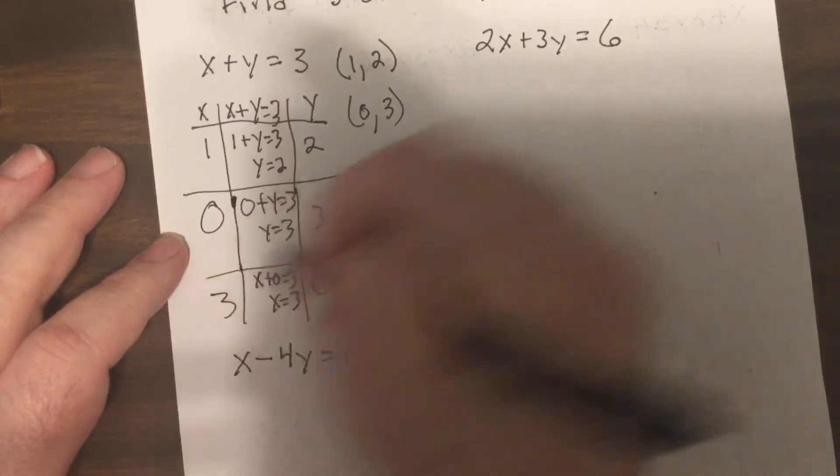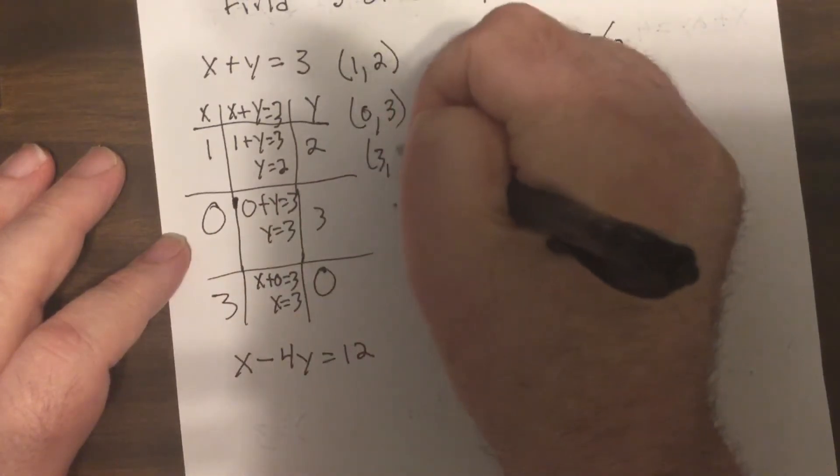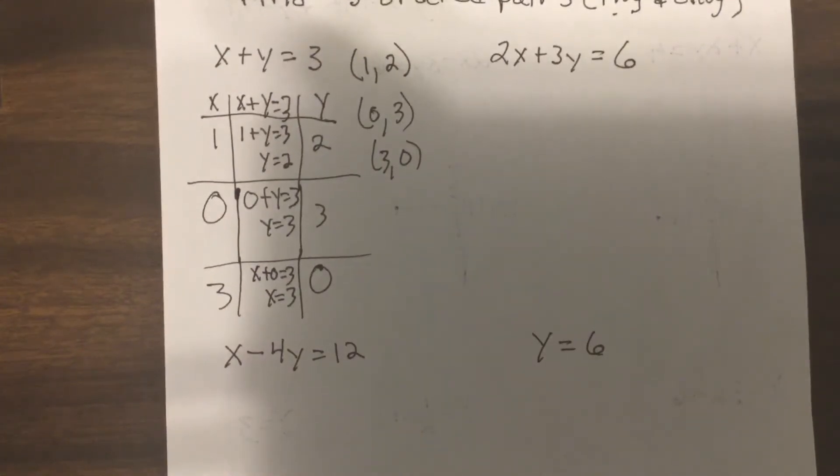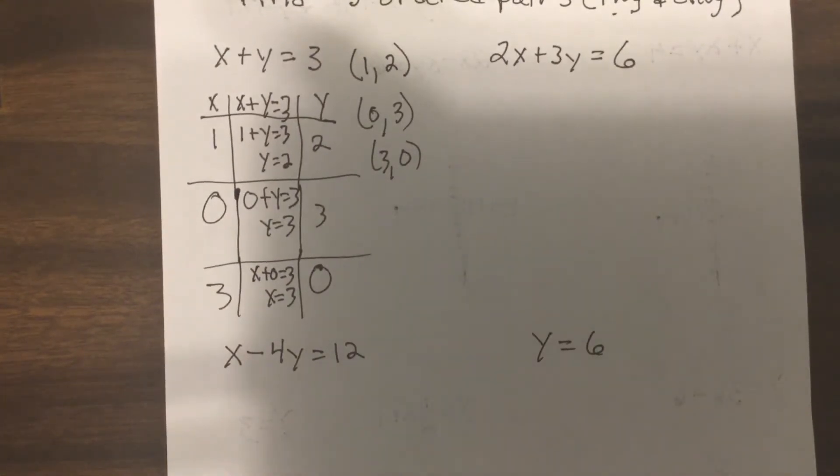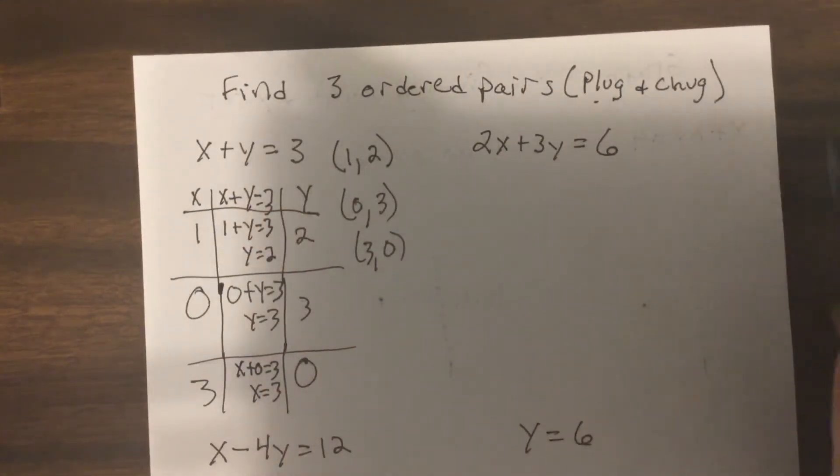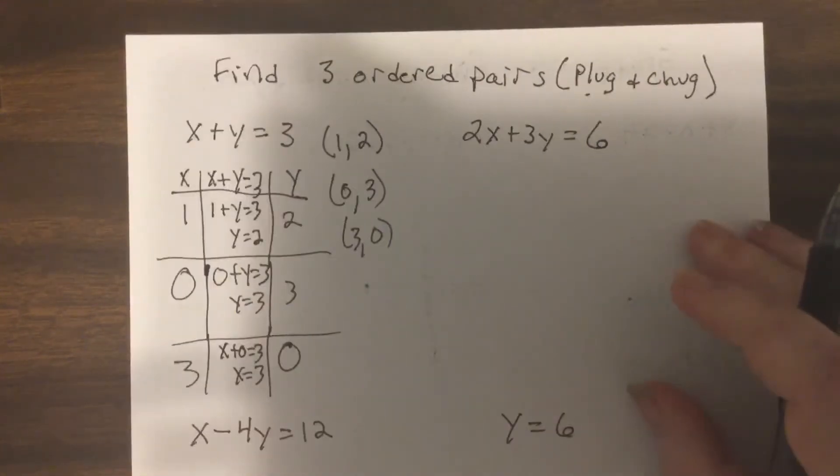Now we can put a number in for Y. Put zero, so I'd have X plus zero equals three, so X equals three. Another ordered pair. Now sometimes students just make this a lot harder than it is, I don't know why.